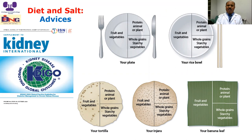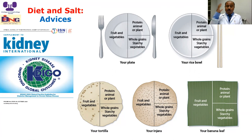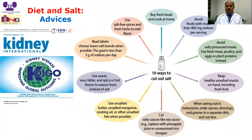Regarding diet, think of the plate: one half from fruits and vegetables, one quarter from protein — animal or plant — and the fourth quarter whole grains and starchy vegetables. Increase the amount of fruits and vegetables. For salt, we don't advise excess salt, nor a completely salt-free diet, but to cut down and reduce salt in food.